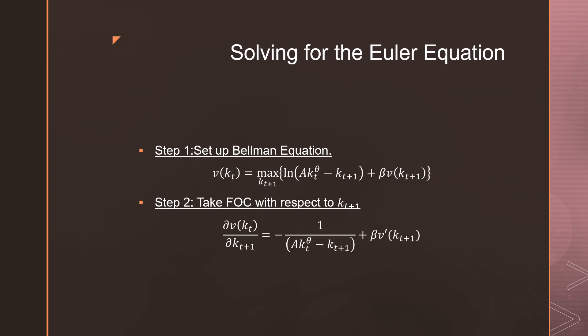So step number one, we're going to set up our Bellman equation and lo and behold, here it is. It's pretty standard. Step number two is that we're going to take our first order condition with respect to kt plus 1. And that's just going to be negative 1 all over a kt theta minus kt plus 1 plus beta times v prime kt plus 1.